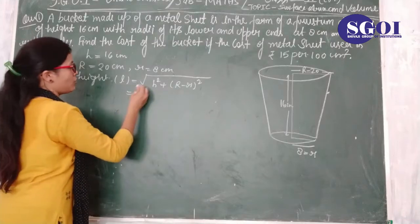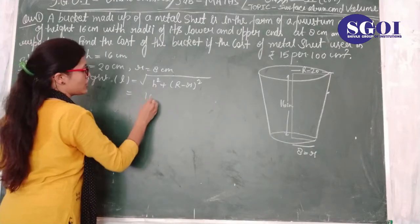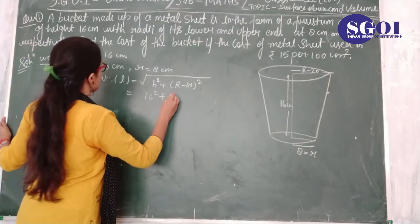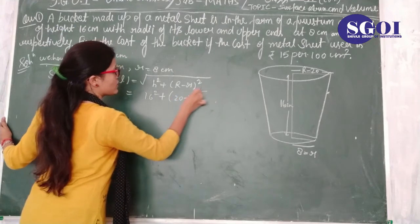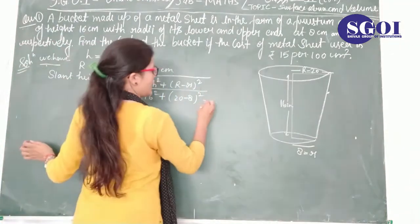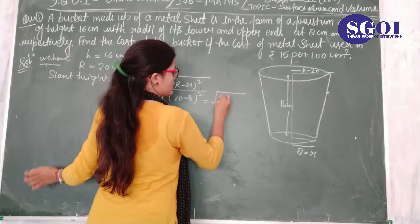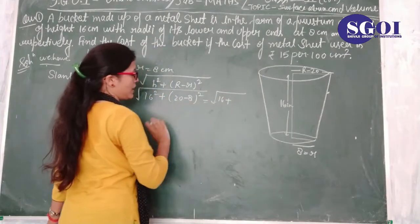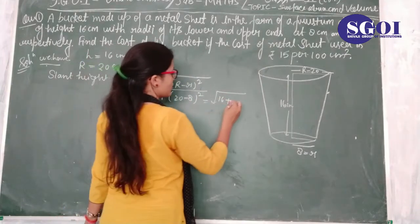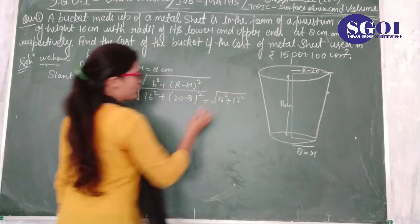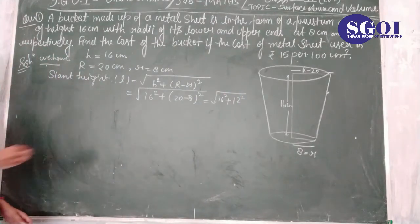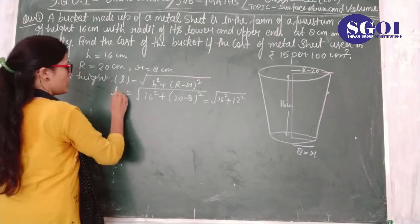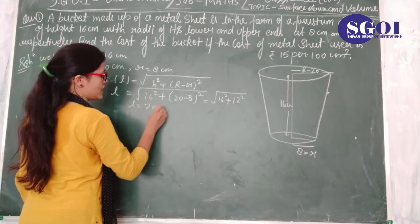Now substituting: L = √(16² + (20 - 8)²) = √(16² + 12²) = √(256 + 144). Solving, we get L = 20 cm.